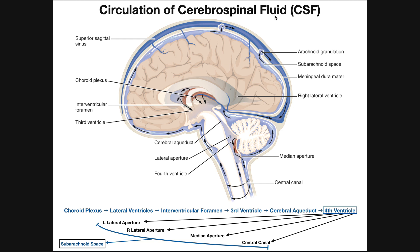CSF still contains nutrients, but it does not contain proteins. It serves some of the same functions as blood — it can remove wastes from the brain and the central nervous system, and can deliver nutrients, although generally the brain relies more on blood directly than on CSF for nutrient delivery. One of the other main things CSF does is circulate in the subarachnoid space, serving as a cushion and shock absorber for protection of the brain.